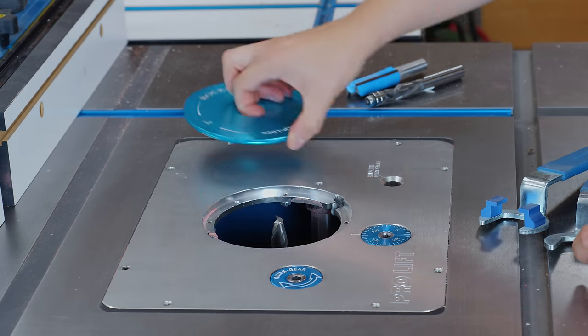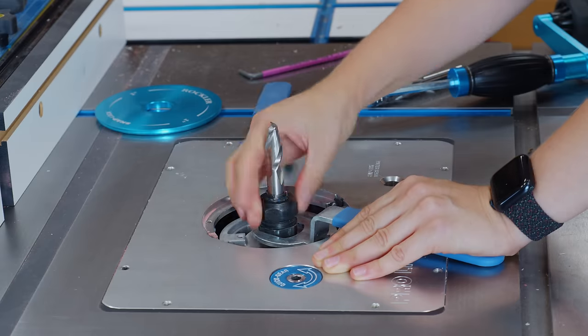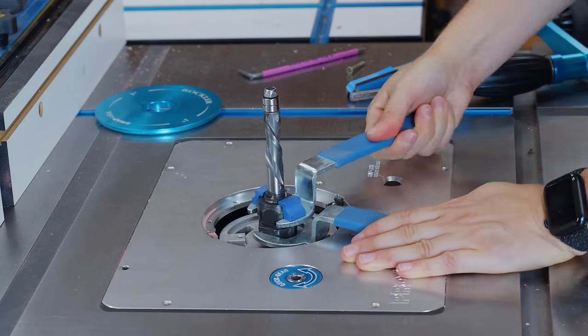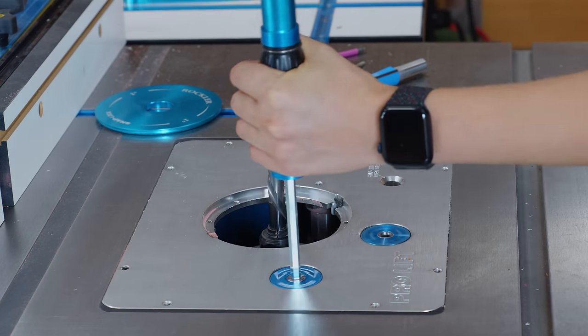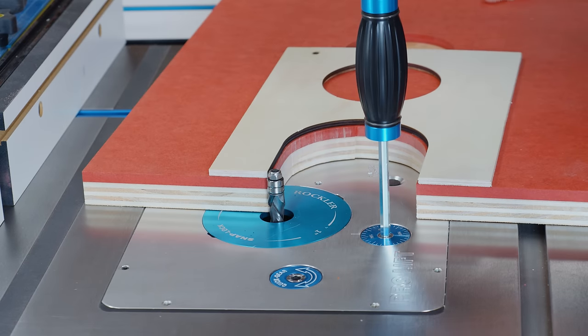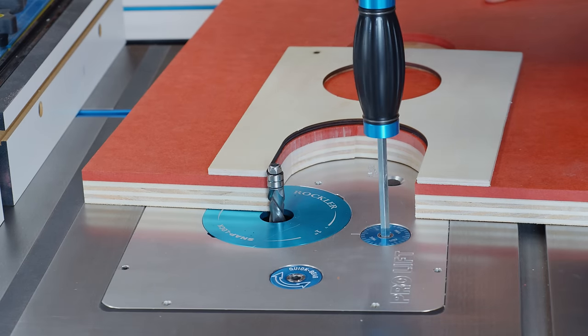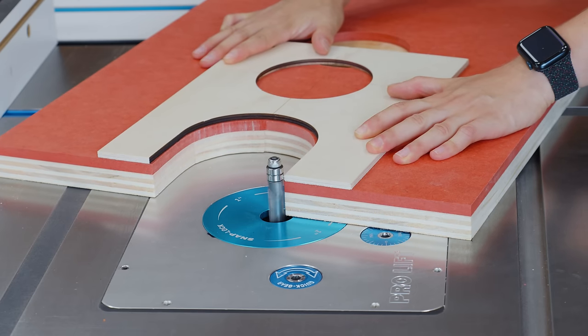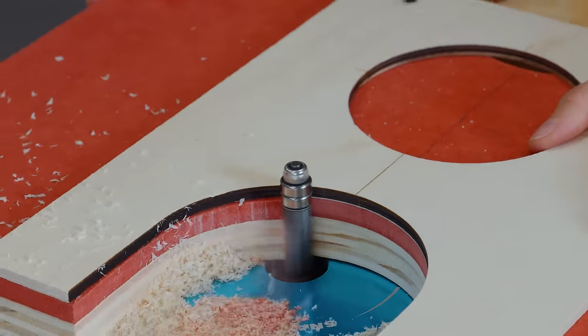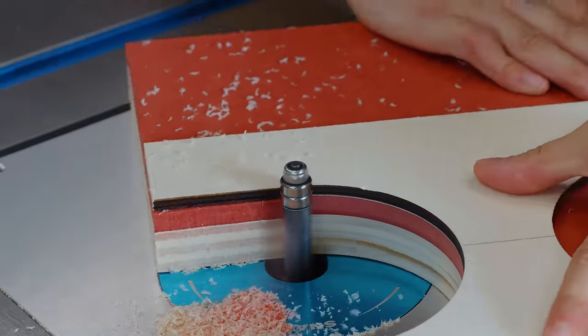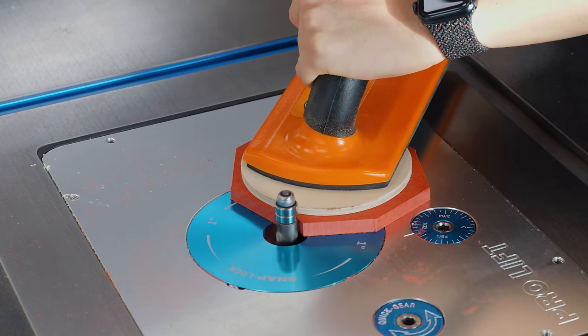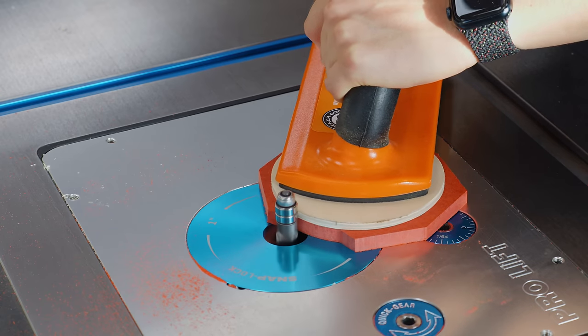I'm using the Rockler Pro lift and a compression flush trimming bit here. It turned out perfect. I can take the ride and make several copies of the insert plates.